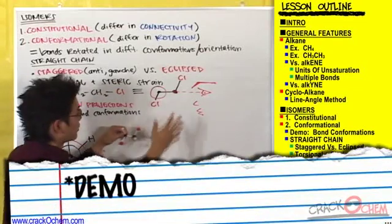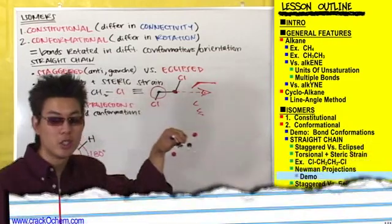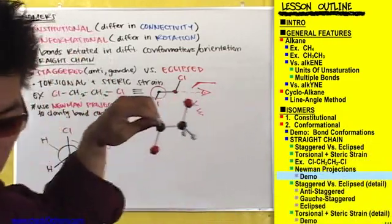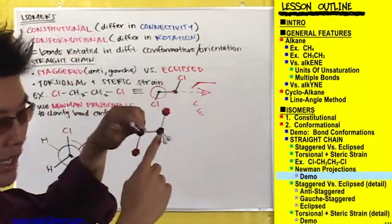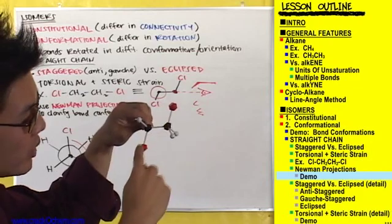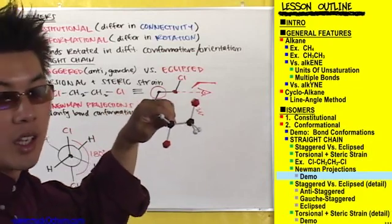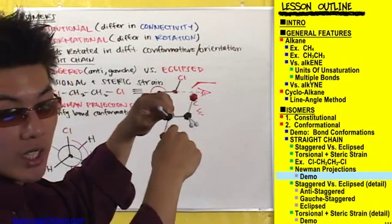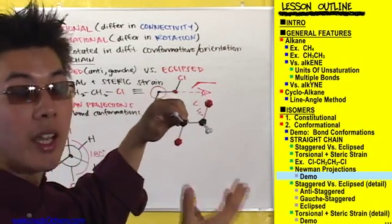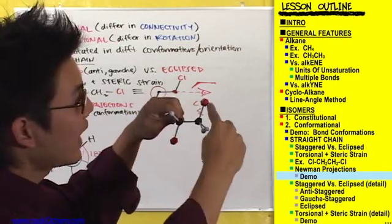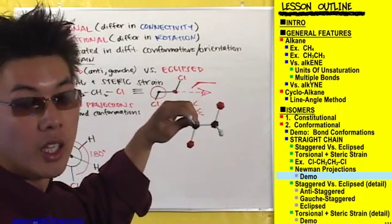Here's the model that we built earlier to represent this compound. Let me go ahead and zoom in one more time for you. So we see our two carbons in black, the chlorines in red, and our hydrogens in white. If we look at this thing straight on, like you're seeing it right now, it's pretty difficult to see exactly how these chlorines are oriented with one another.